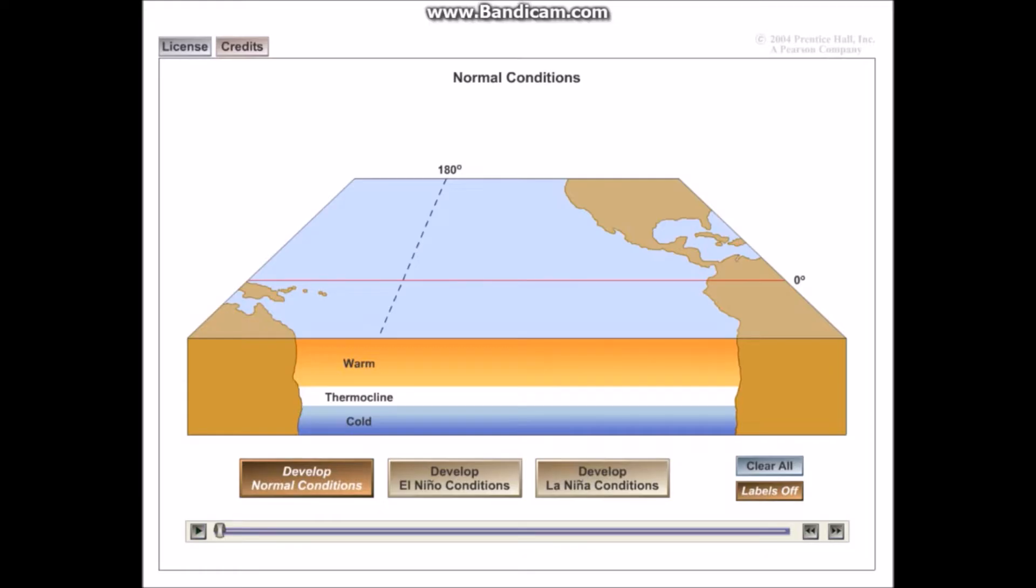Before I start explaining what occurs in normal conditions, if you look on the right hand side of the map we have South America and the United States and North America, and on the left hand side of this map over here we have Southeast Asia and Australia. So when I press play in normal conditions what we're going to see is what typically occurs in the Pacific Ocean.